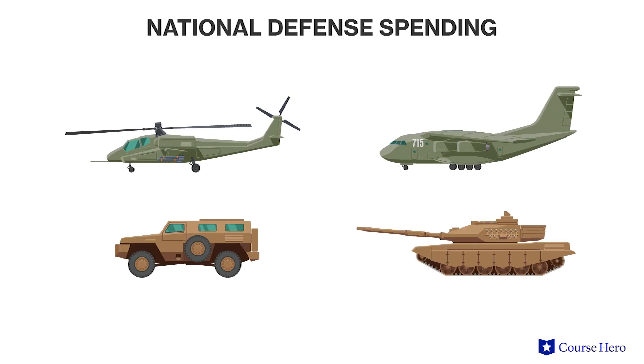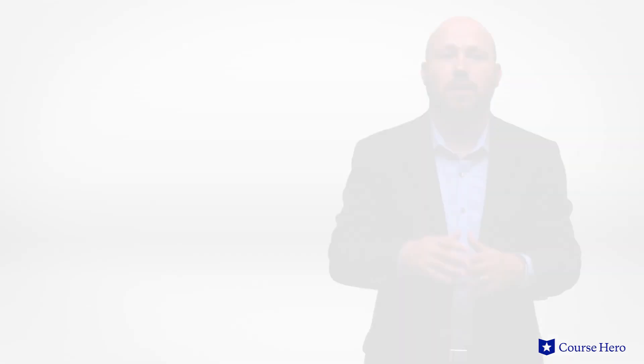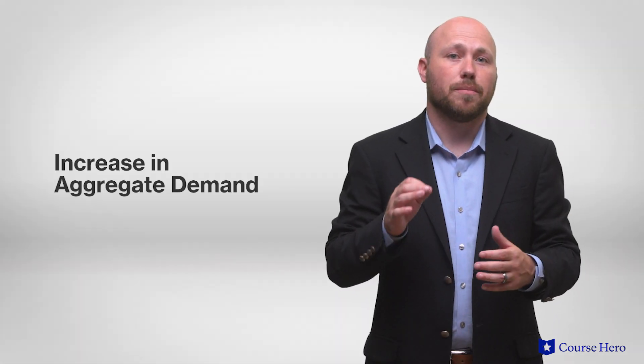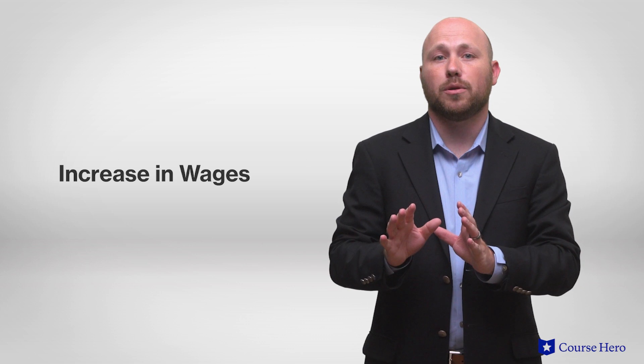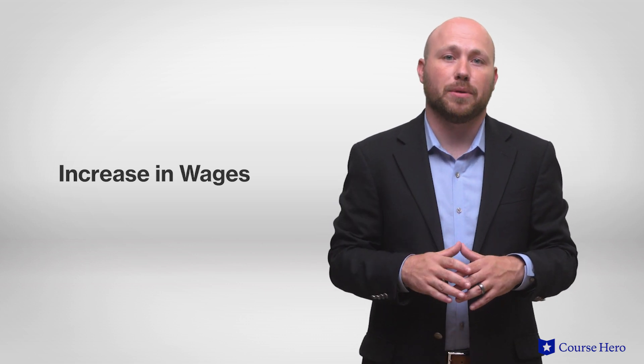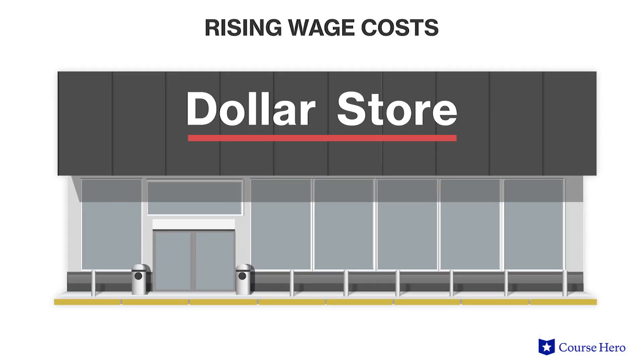For example, the federal government may increase spending in the national defense sector to hire more government workers and thus lower unemployment. This would increase aggregate demand because overall people would have more disposable income. However, this action would also cause an increase in nominal wages because firms would have to compete for fewer workers. Faced with rising wage costs, firms would pass these cost increases onto consumers in the form of higher prices.